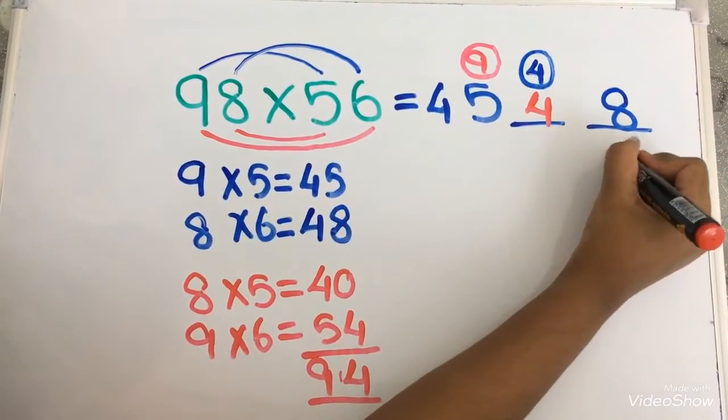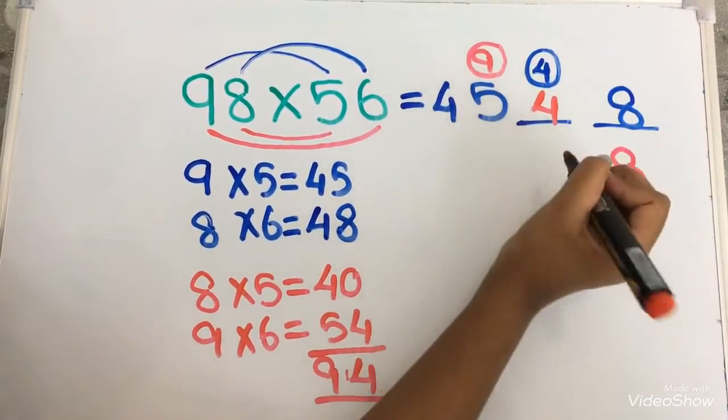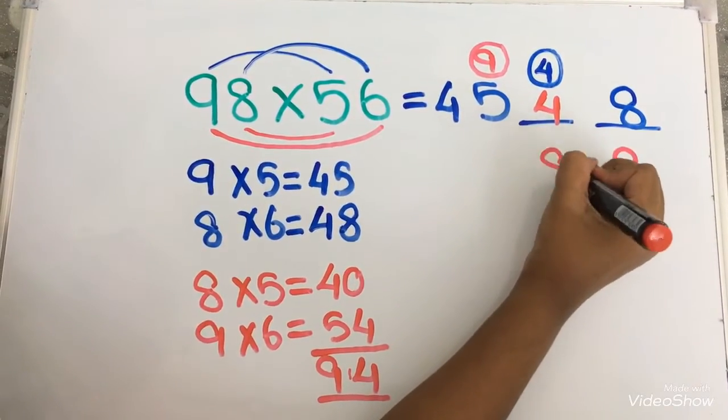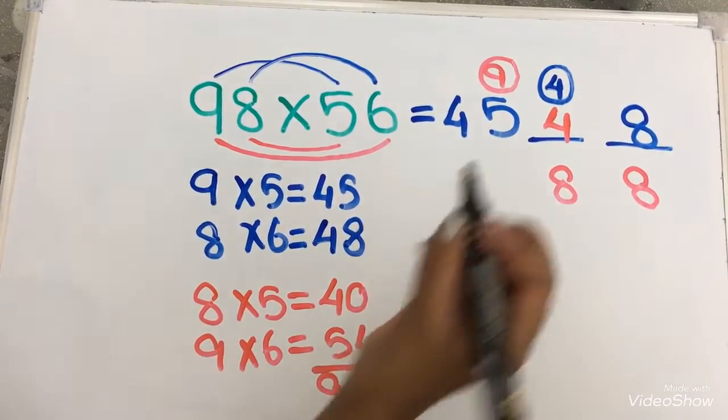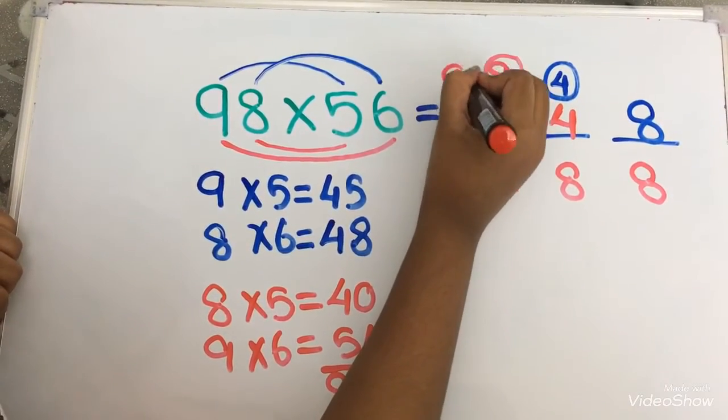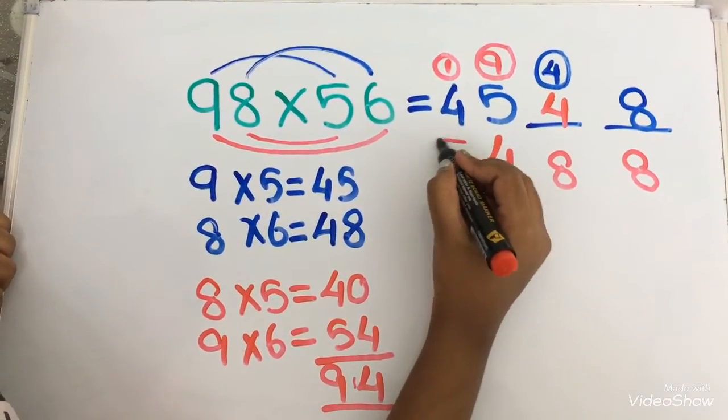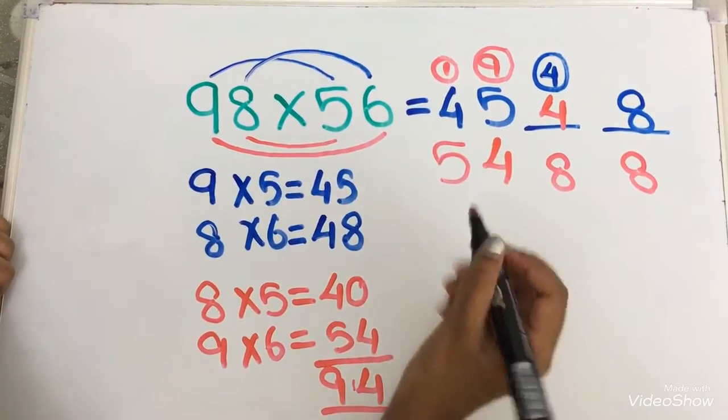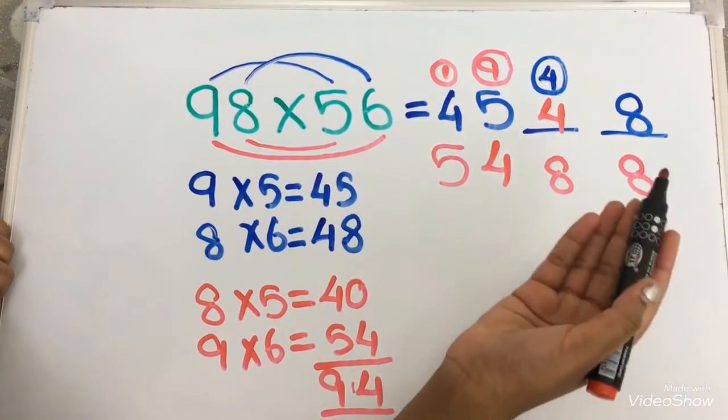Now, let's add it over here. 4 plus 4 equals to 8. 9 plus 5 equals to 14. So, 4, 1 carry over and 1 plus 4 equals to 5. The answer is 5,488.